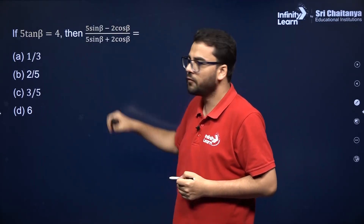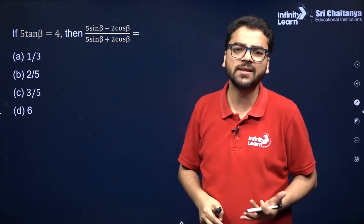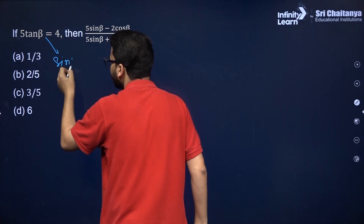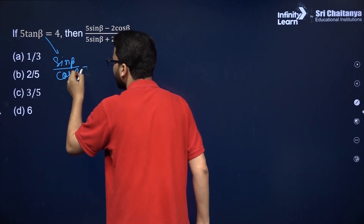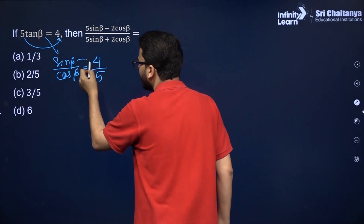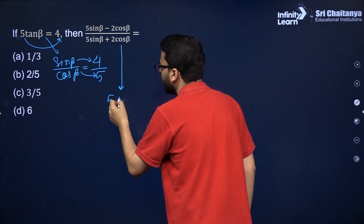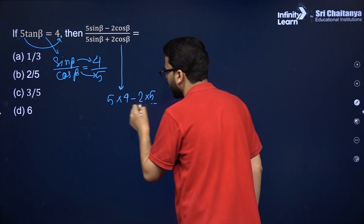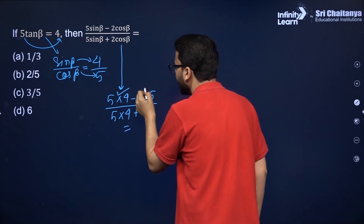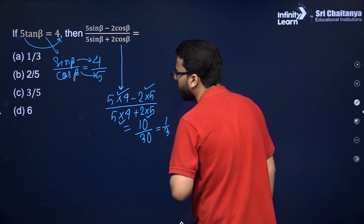Next MCQ: if 5·tan β = 4, find the value of (5sinβ - 2cosβ)/(5sinβ + 2cosβ). Since tan β = sin β/cos β = 4/5, you can directly put sin β = 4 and cos β = 5 in the expression. Numerator: 5×4 - 2×5 = 20 - 10 = 10. Denominator: 5×4 + 2×5 = 20 + 10 = 30. So the answer is 10/30 = 1/3. Option A is correct.